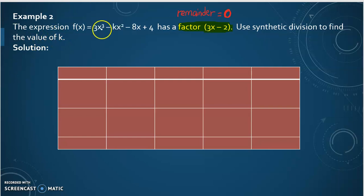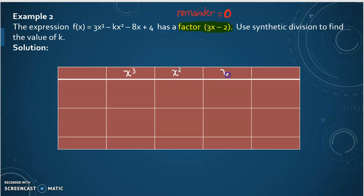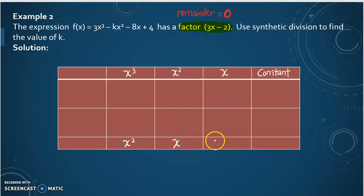We wish to find the value of k. This is our function. First, we will substitute the values here: x³, x², x, and constant. The value goes down here — if here is x³, here is x², reducing the index by 1. If here is x², here is x. If here is x, here is constant. And our final column is the remainder.